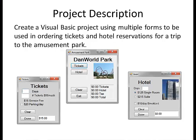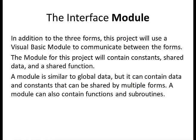This project starts out like any of the previous projects when creating the main form. We'll create the form and name each of the objects. It may be easier to create the subforms before writing the event handlers for the objects on the main form and any other subroutines or functions that are needed. The interface module — in addition to the three forms — the project will use a Visual Basic module to communicate between the forms. The module for this project will contain the constants, shared data, and a shared function. The module is similar to global data but it can contain constants that can be shared by multiple forms, as well as functions and subroutines.